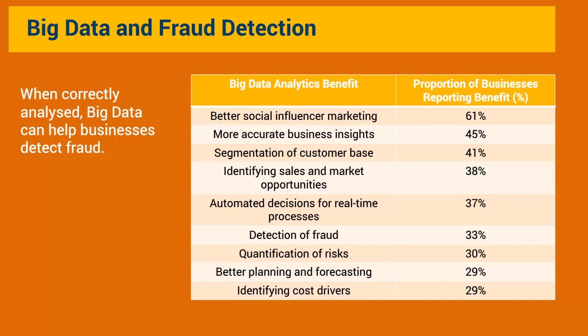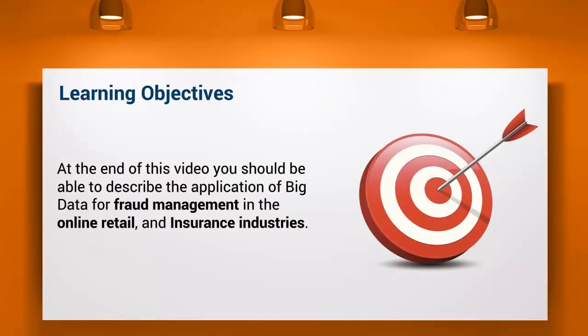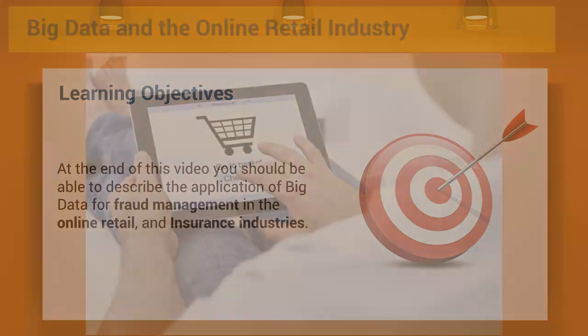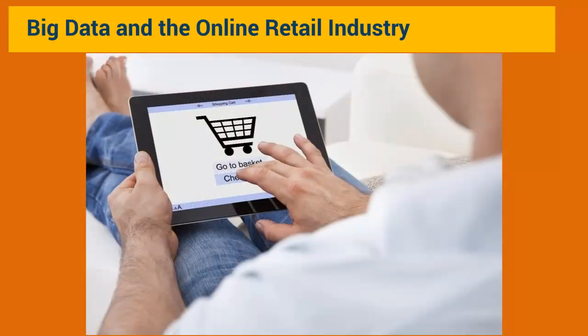When correctly analyzed, this data has been found to benefit businesses in detecting the occurrence of fraud. Frauds usually occur in banks and other financial organizations, as well as in the online retail sector. Big data can be used not only to educate these businesses and their customers, but also to prevent fraud and save the losses incurred. In this video, you will learn about the application of big data for fraud management in the online retail and insurance industries, focusing on some real-life examples.